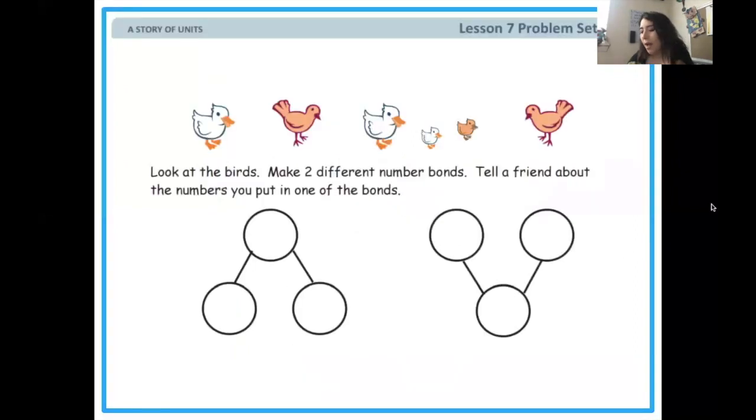Now we're on to our problem set for today. So look at the birds. I want you to make two different number bonds about these birds. So what's one way we could group them? The type of bird. Okay. Yes. The type of bird because if you notice some of the birds have a pointy beak and some have a really flat beak with little hair sticking out in the back of their head. Do you see those two different types of birds?